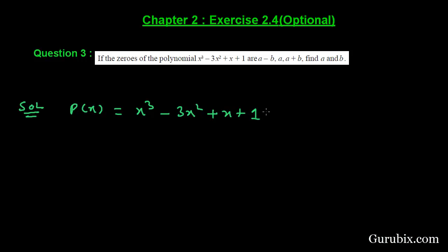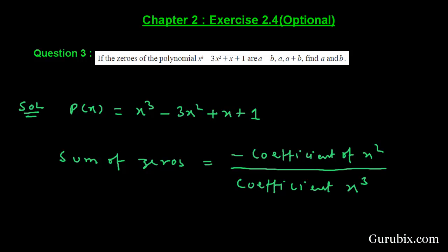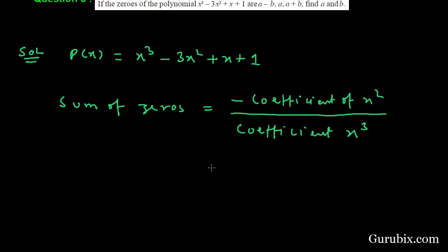First, we shall find the sum of its zeros. We know the sum of the zeros of a cubic polynomial is minus the coefficient of x² over the coefficient of x³. Here we have minus the coefficient of x², which is -3, and the coefficient of x³ is 1. Therefore, this equals 3.